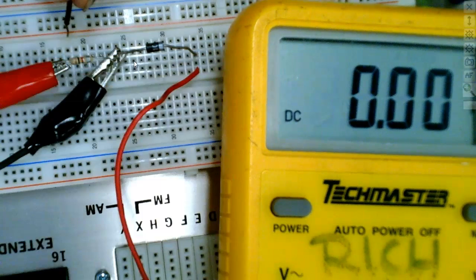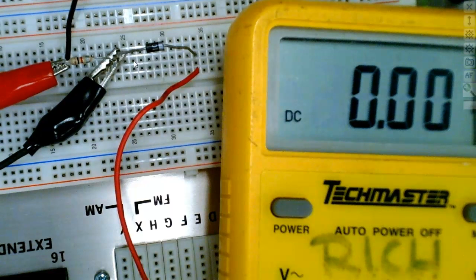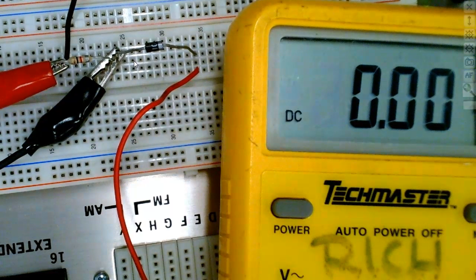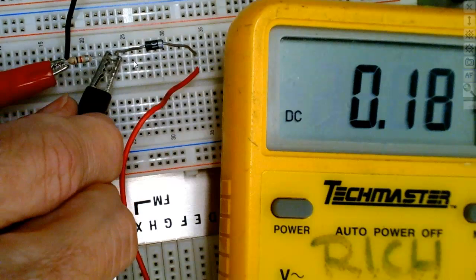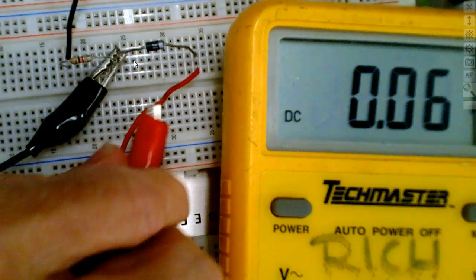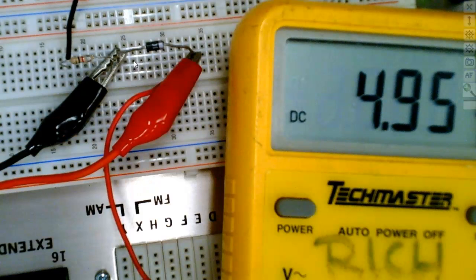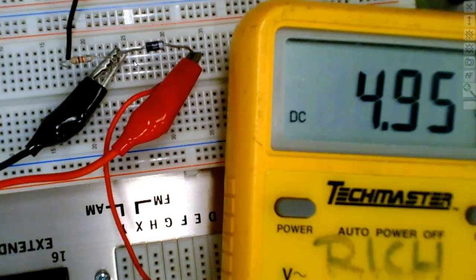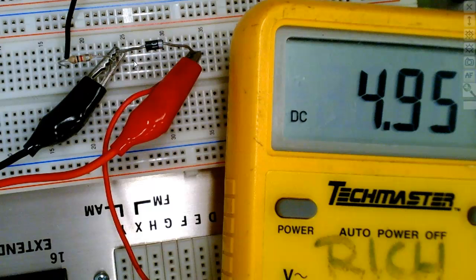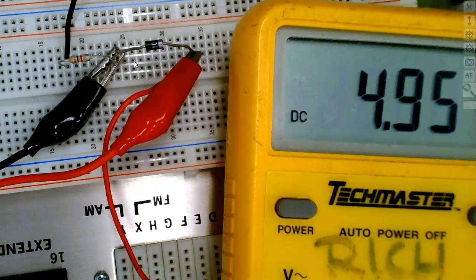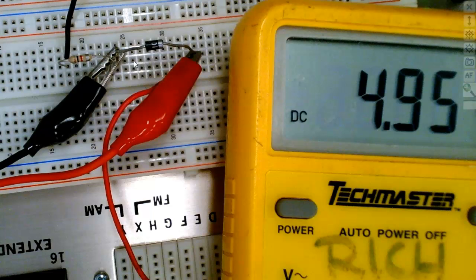Now the diode is reverse biased. How much voltage drop do we have across the resistor? None, because it's acting like an open switch. If I look across the diode now, is there current flow through it? Yes, because there's a path. We call it leakage current but it's so low, down in the nanoamps, that my meter can't even see that. But there is a leakage current.